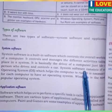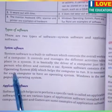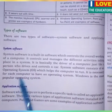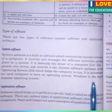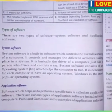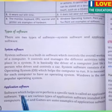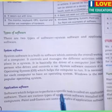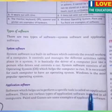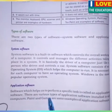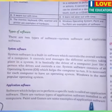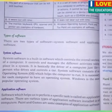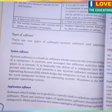System software consists of an operating system which helps a computer to run. It is necessary for each computer to have an operating system. Windows is the most popular operating system. Application software is software which helps us to perform a specific task. There are various types of application software installed in all computers. Paint and games are some examples of application software.